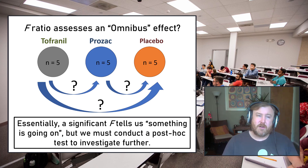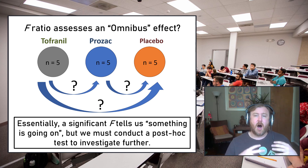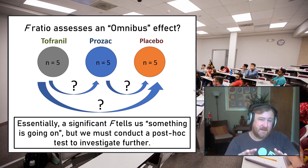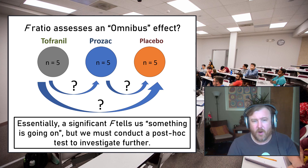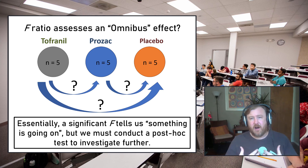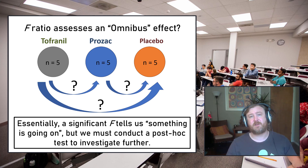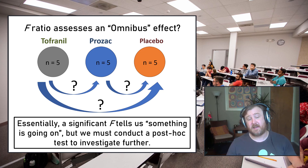The F ratio is commonly called an omnibus effect — it's an overarching spotlight asking 'should we investigate further?' If something is detected, we need to dig in and see what is significantly different from what else. Essentially the omnibus F ratio tells us something is going on — there is at least one significant difference between group means — and we need to conduct a post hoc test or planned comparison to actually learn something from the data.